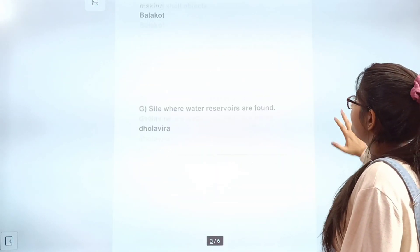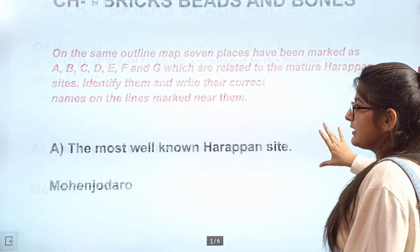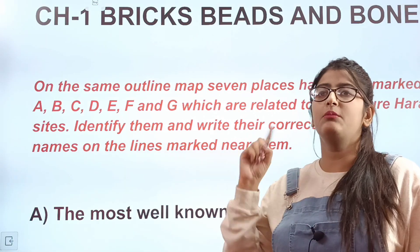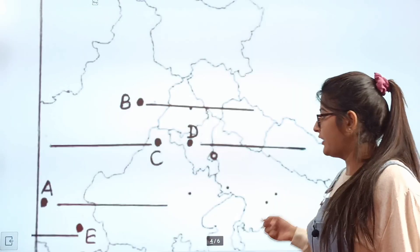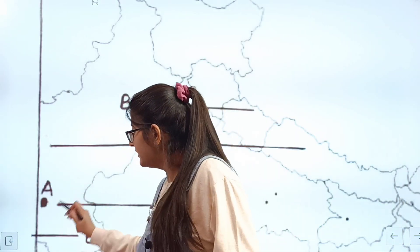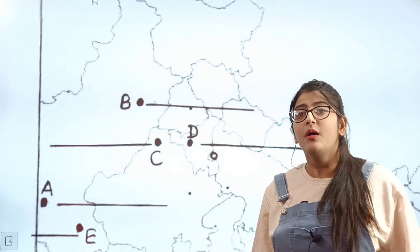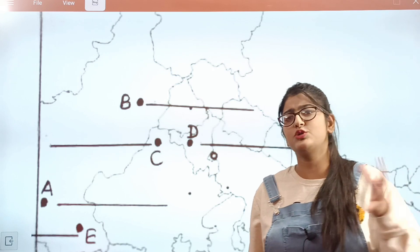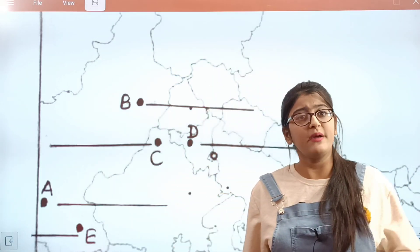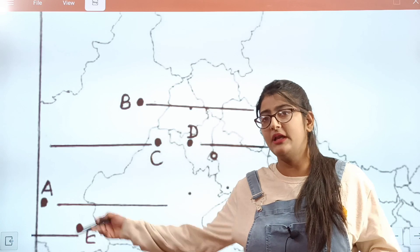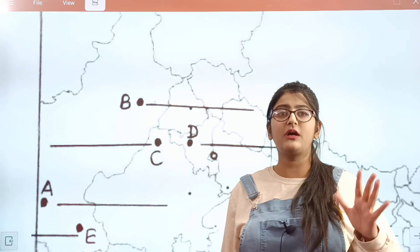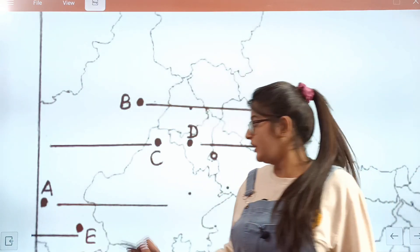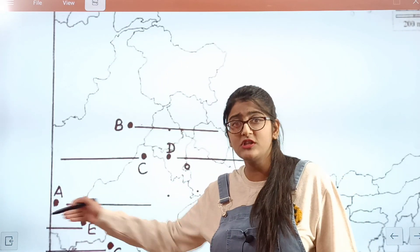Let's see the questions now. This is the most important for the Bricks, Beats, Bones map. First question: which is the most well-known Harappan site? This is marked as A on the map. Look — A is marked here in this region, and the answer is Mohenjo-daro. Check the map and confirm that A is marked as Mohenjo-daro.